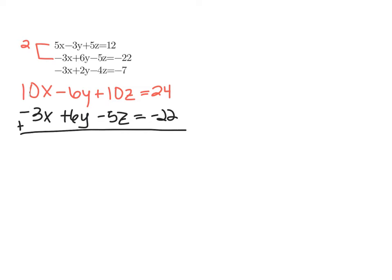Now I'm going to combine these two equations and get a new equation. When I combine them, the Y's eliminate, and I get 7X plus 5Z equals positive 2.